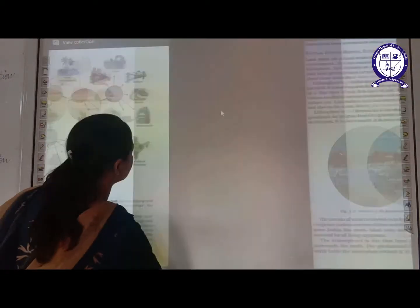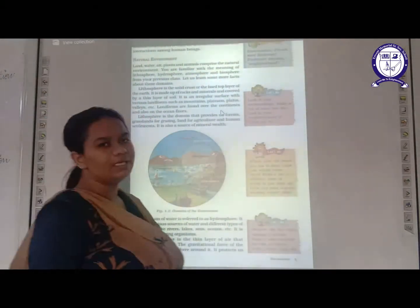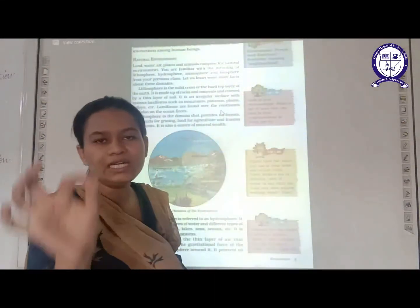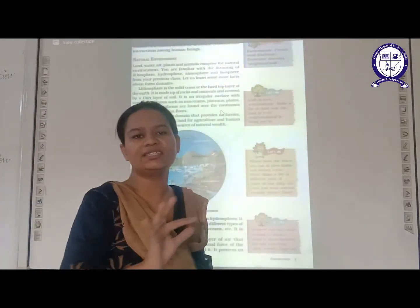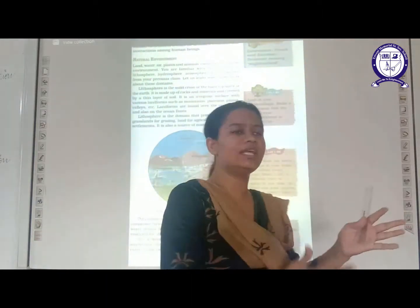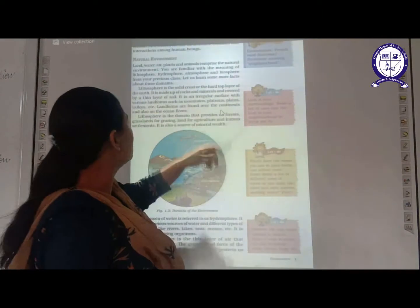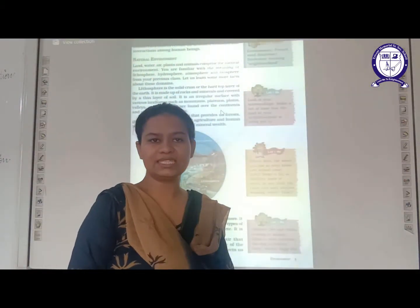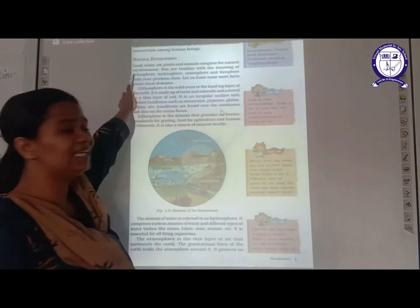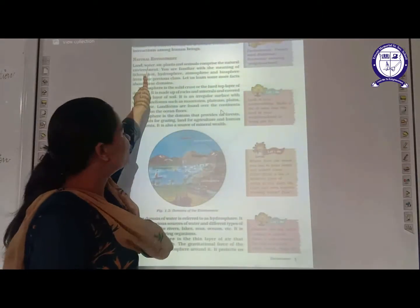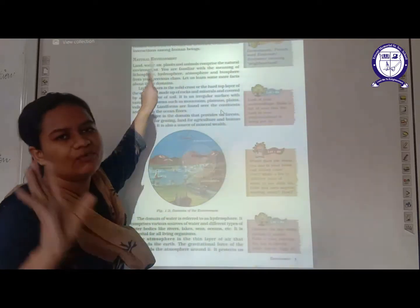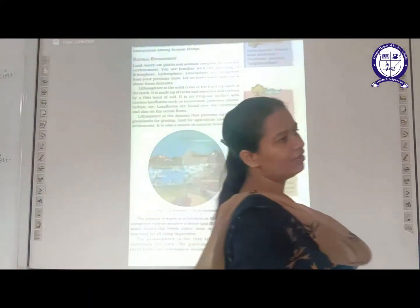There is natural environment — the environment which is created by nature itself, with no role of human beings. That is gifted to us by nature. You can see all your rivers, mountains, lands — these comprise your natural environment. Land, water, air, plants and animals comprise your natural environment. Now remember, in your last class — Class 6 — you studied about the major domains of the Earth. Here also we are talking about those four major domains.